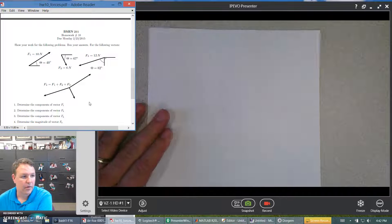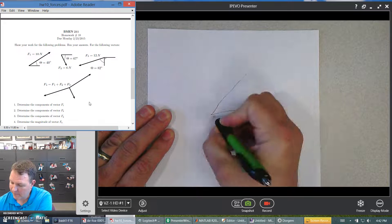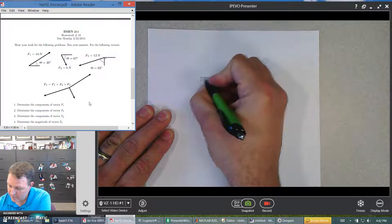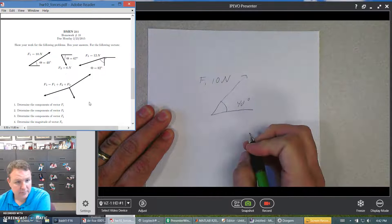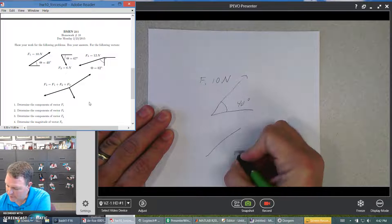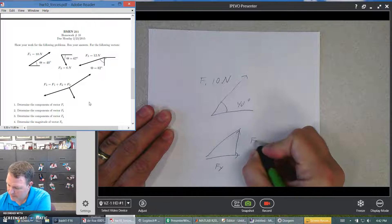We need to determine the components of the vector F1. We have an angle of 40 degrees. This force is 10 newtons. That means we need to break that into components, Fx and Fy.